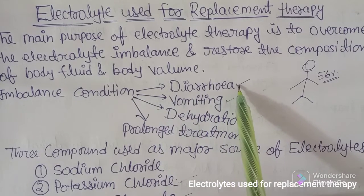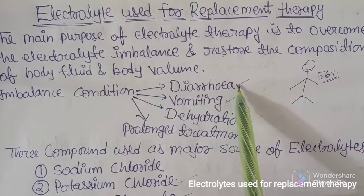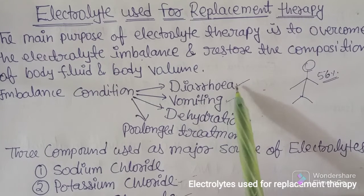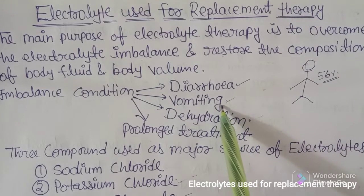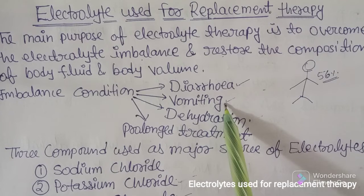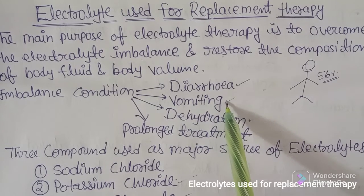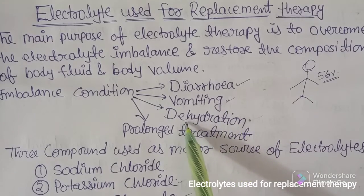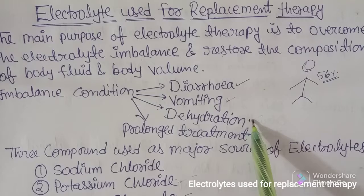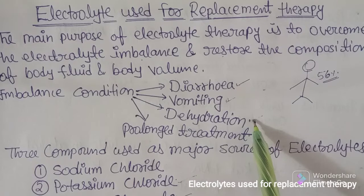The first condition is diarrhea — whenever dehydration takes place because of loose motion or because of contaminated food consumed and there is no digestion, the person will undergo water loss and diarrhea. The second condition is vomiting — whenever contaminated or deteriorated food is consumed it cannot be digested, leading to vomiting through chemoreceptor trigger zone activation, and dehydration may also occur. Additionally, dehydration occurs in summer or for many other reasons causing body water loss.